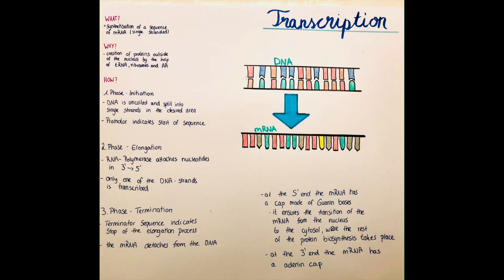What is also worth mentioning is that in the mRNA we have caps on both sides. At the five prime end of the mRNA there's a cap made of guanine bases, and this ensures the transition from the nucleus to the cytosol where the rest of the protein biosynthesis will take place. And at the three prime end of the mRNA is an adenine cap — also one of the four bases — but the function of this adenine cap is not fully understood yet. mRNA by the way just stands for messenger RNA, because it carries the message for the protein which is needed by the body.